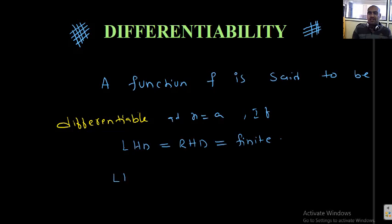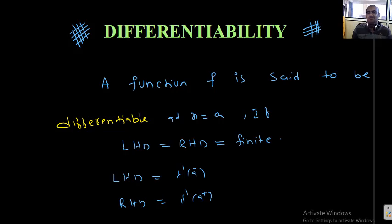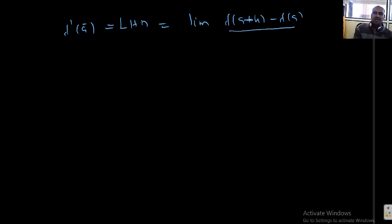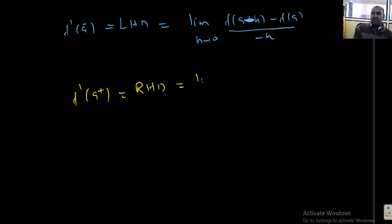LHD is nothing but f dash of a minus. RHD is nothing but f dash of a plus. How to find LHD? F dash of a minus is the limiting value of f of a minus h minus f of a, divided by minus h, as h tends to 0. RHD, that is f dash of a plus, can be found using f of a plus h minus f of a, divided by h, as h tends to 0.